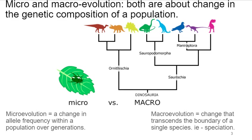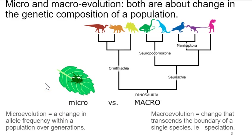Microevolution means you have a change in the allele frequency within a population over generations. For example, you could look at a coronavirus that's actively infecting humans — what it looked like in a bat reservoir, what it looked like in the first infected human, and then in all the thousands infected since. You would find evidence for genetic change within that one species of coronavirus. That's change within the context of a species genetically, and that's microevolution.